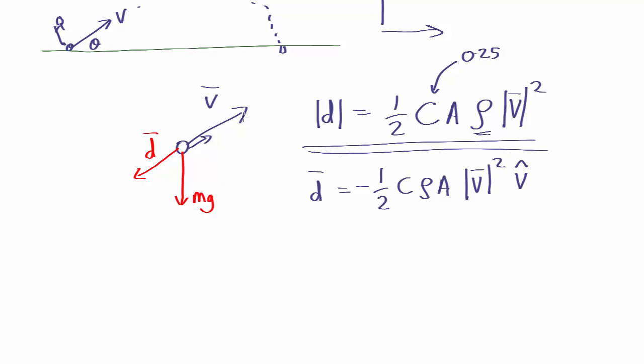Now we can simplify this a bit because if you remember the unit vector is just the vector divided by the length of the vector to make it have length one. So if we substitute that in, we see it's minus half c rho a, that cancels out one of the mod v's, times v the vector not v the unit vector. So that simplifies it a little bit.